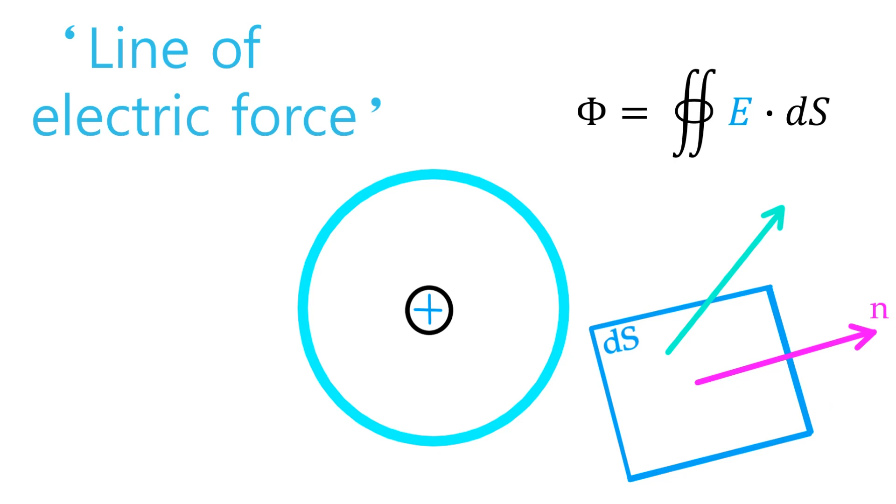Then, let's suppose the angle between electric vector and normal vector is theta. The inner product of those two vectors means projection of electric vector to normal vector.